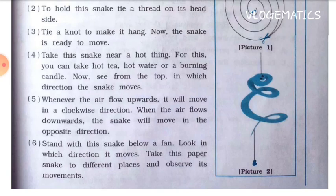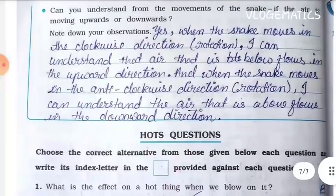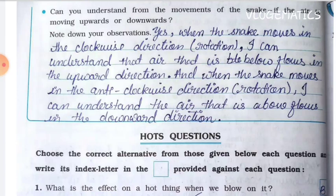When the air flows down, the snake will move in the opposite direction. Stand with the snake below a fan and observe which direction it moves. Take it to different places and observe. Answer: Yes — when the snake moves in a clockwise direction, air below is flowing upward. When the snake moves in an anti-clockwise direction, air above is flowing downward.